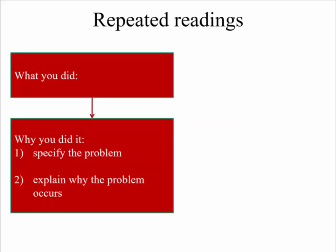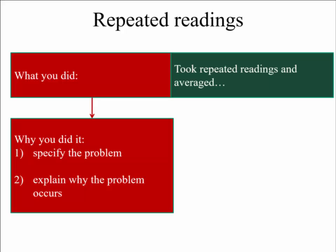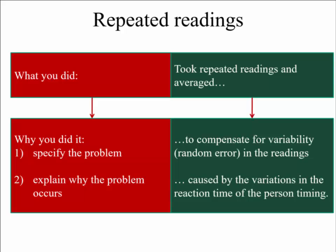The second thing we've talked about before is taking repeated readings. So for anything that has random error, it's always good to take repeated readings. You are going to expose then truly what the variability in those readings are. Then you can average them and get an estimate for how certain you are about those measurements. So what you did, you took repeated readings and you averaged the values. And why you did it, it was to adjust for or to compensate for the random error in those readings, which may have been caused, in the case of timing something, caused by variations in the reaction time of the person timing.